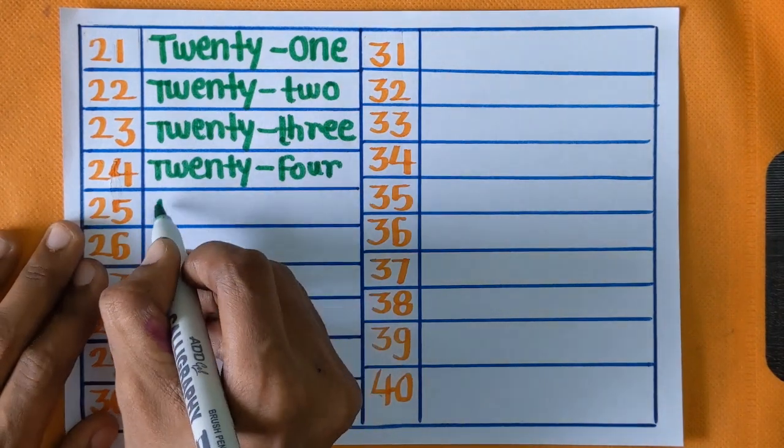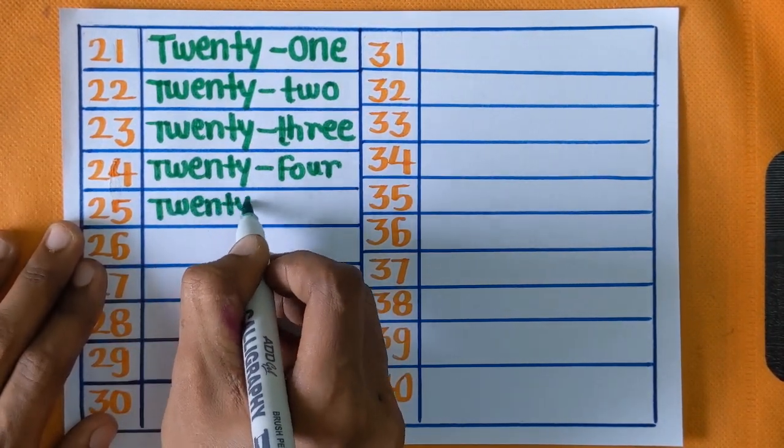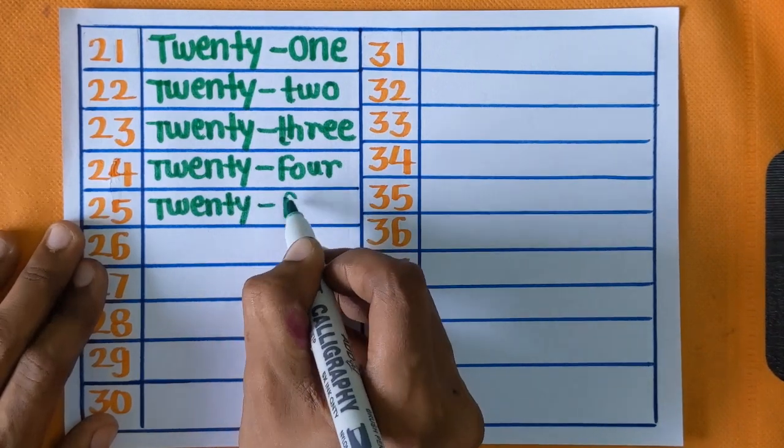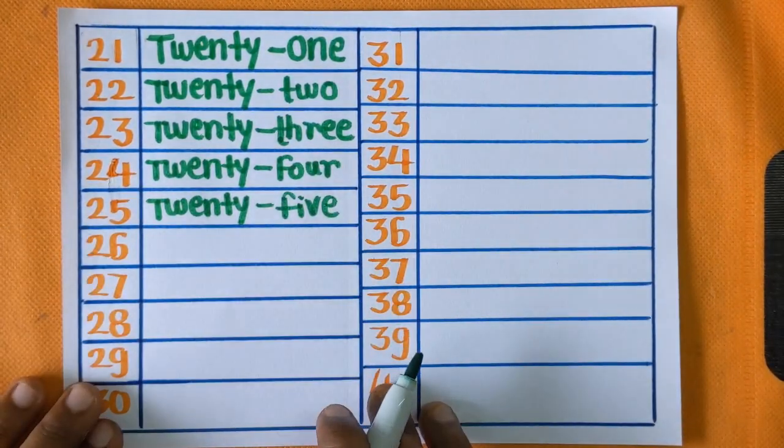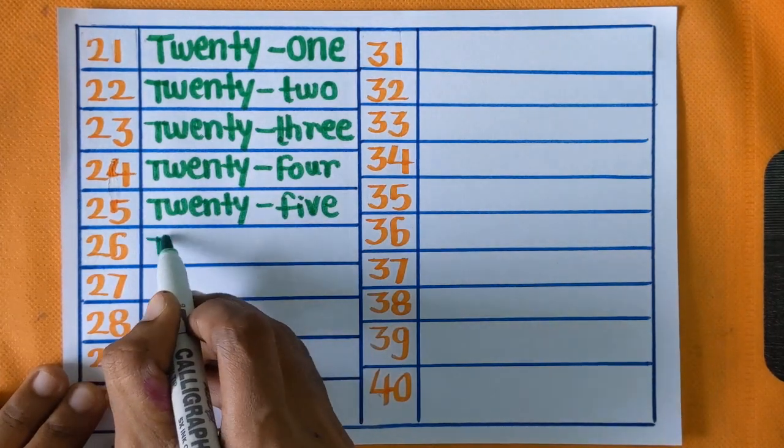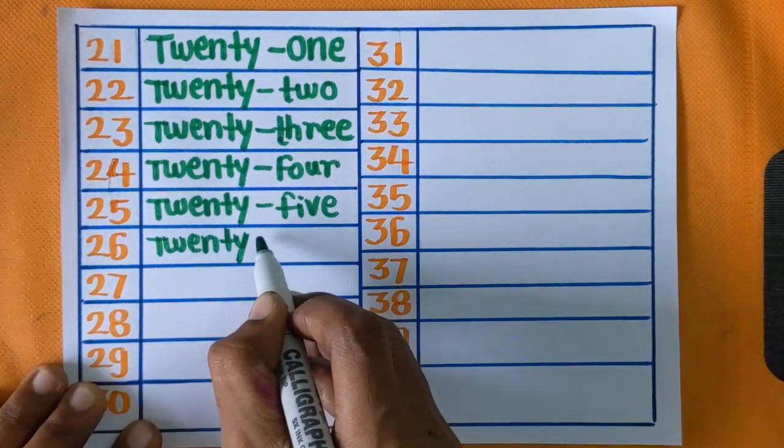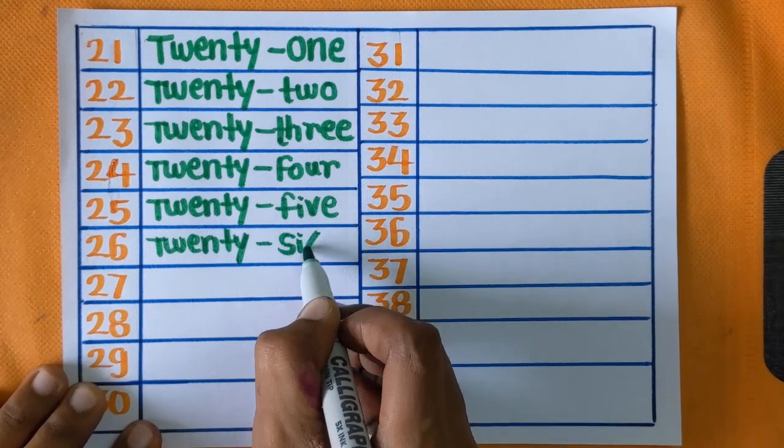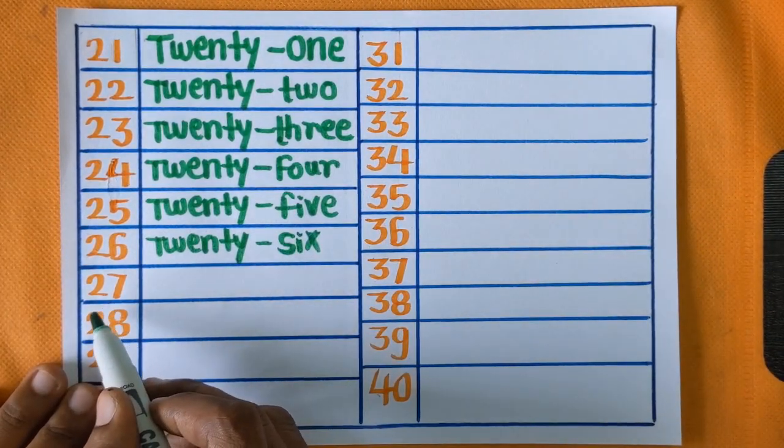Twenty-five: T-W-E-N-T-Y, twenty-five, F-I-V-E. Next is number twenty-six: T-W-E-N-T-Y, S-I-X, twenty-six.